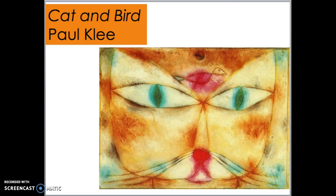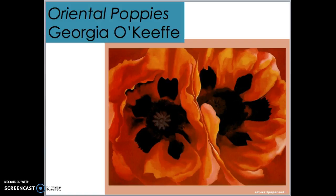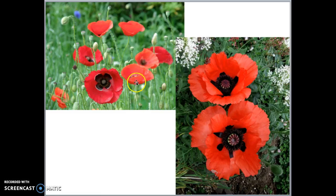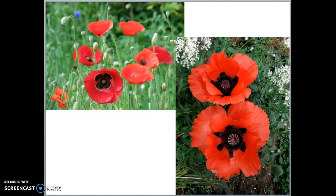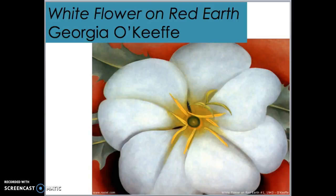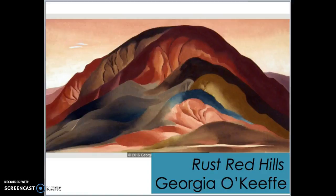Now we're moving on to Georgia O'Keeffe — she had some great titles, also kind of to the point. This one's called Oriental Poppies. Poppies are a type of flower with very delicate petals and a large area in the middle where the pistil and stamen are. On an Oriental Poppy, it's very black on the inside — you can see it here. This painting by Georgia O'Keeffe is called White Flower on Red Earth. This one is called Rust Red Hills — if you've ever seen rust on metal, you'll know it's kind of this color.